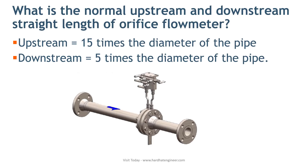What is the normal upstream and downstream straight length for an orifice flow meter? The orifice flow meter is used to measure the flow in a pipeline. To get an accurate result, steady flow is necessary. Any piping component will create some amount of turbulence in the line. To avoid this, only straight pipe is preferred upstream and downstream of the orifice meter. The minimum straight length preferred upstream is 15 times the diameter of the pipe, and downstream it is 5 times the diameter of the pipe.